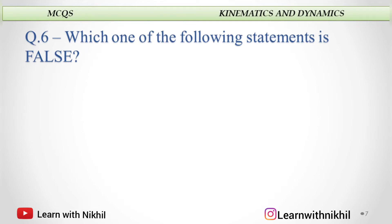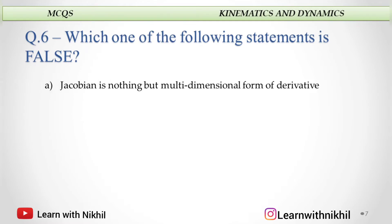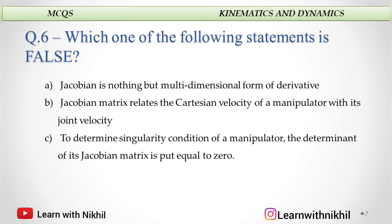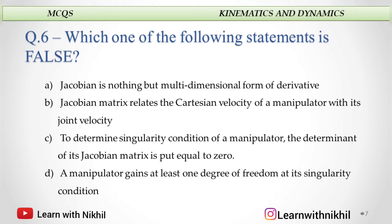Which of the following statements is false? Jacobian is the multidimensional form of derivative. Jacobian relates the Cartesian velocity of a manipulator with its joint velocity. To determine singularity condition of a manipulator, the determinant of its Jacobian matrix is equal to zero. A manipulator gains at least one degree of freedom at its singularity condition. The answer is the last one — that is the false statement.